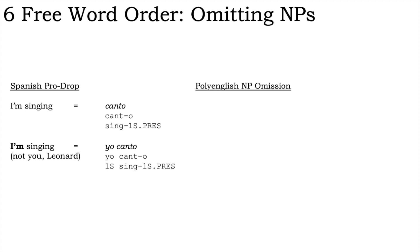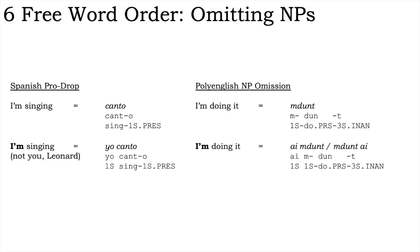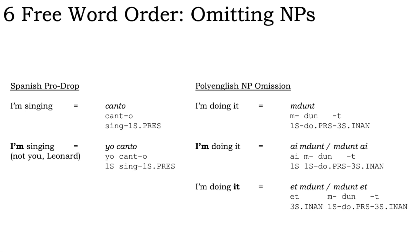Non-configurational-type polysynthetic languages extend this pattern in two ways. First, since they mark both subject and object on the verb, there's no need to express either with overt pronouns. But secondly, they frequently drop entire noun phrases, not just pronouns. Even in mildly configurational polysynthetic languages, like Ojibwe, it's very rare for both the subject and the object of a verb to be expressed with a full noun phrase.